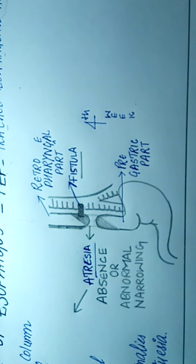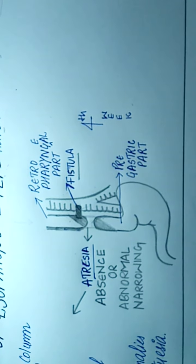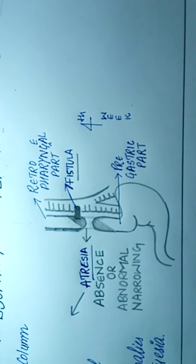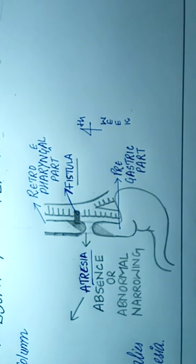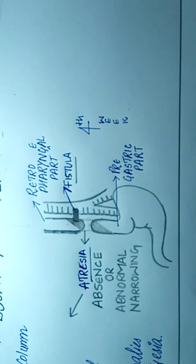When there is a malformation in this tube formation, then there will be formation of atresia and a fistula, which may lead to complications.